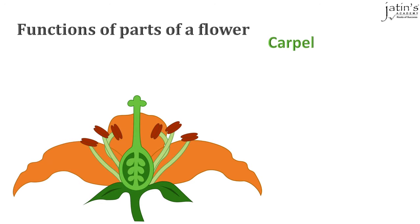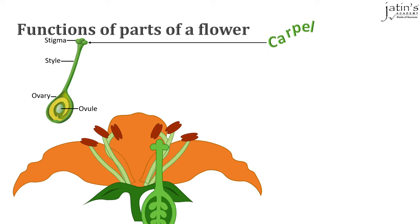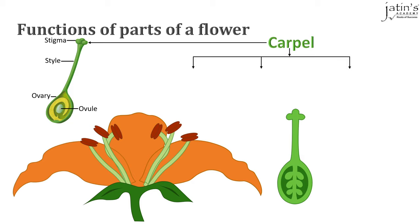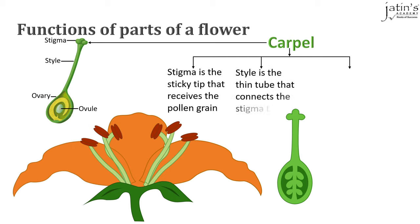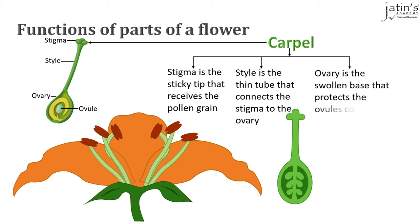Moving on to the female reproductive part of a flower, the carpel, also known as the pistil. The carpel consists of three main parts: stigma, which is the sticky tip at the top that receives the pollen grain; style, which is a thin tube that connects the stigma to the ovary; and the ovary, which is the swollen base that protects the ovules containing the egg cells, or the female reproductive cells.